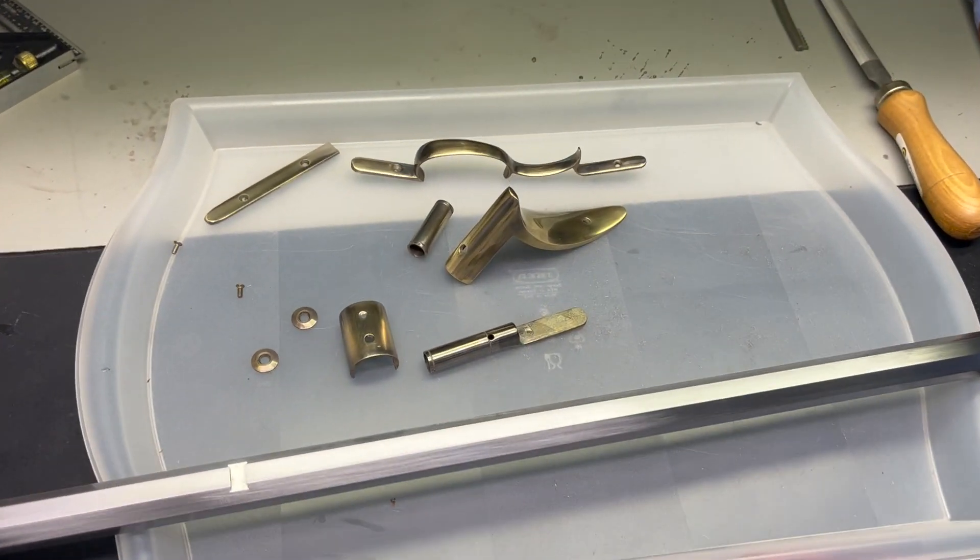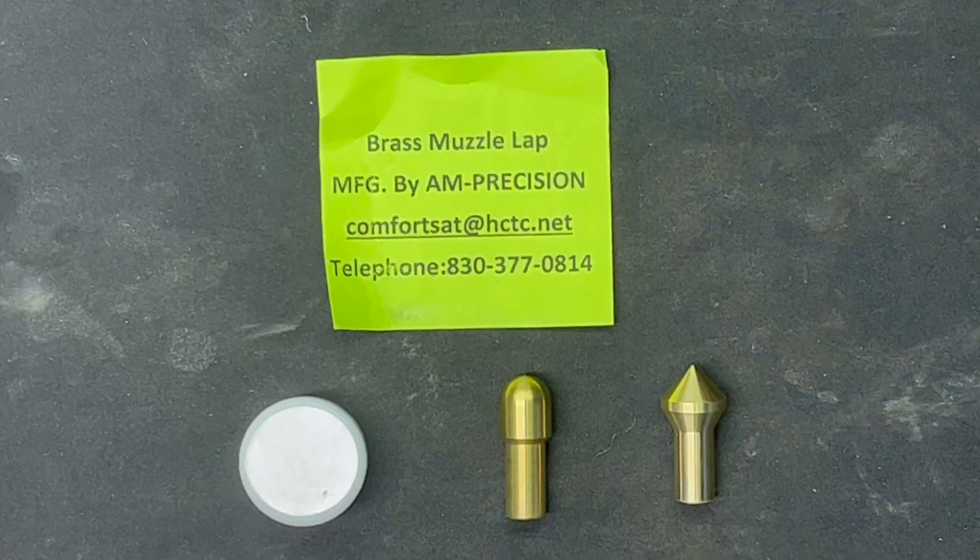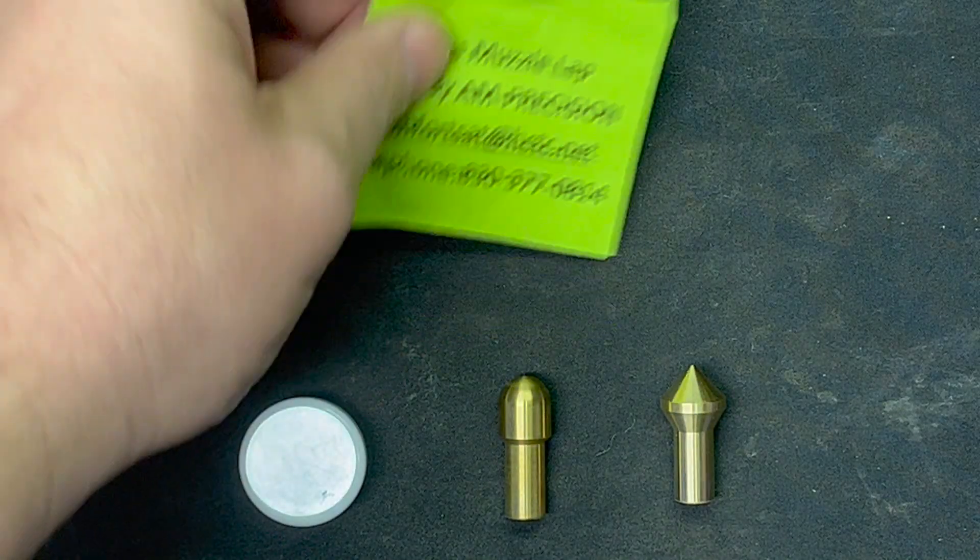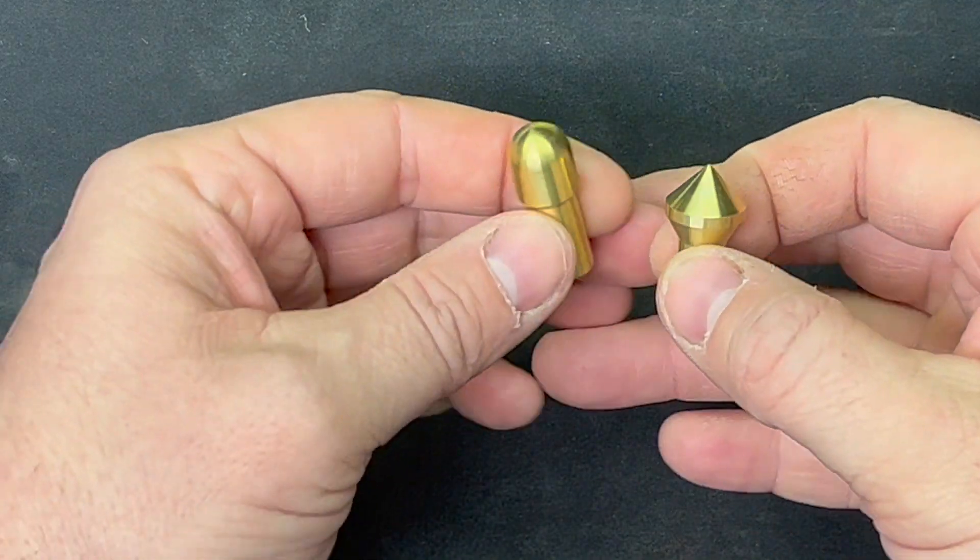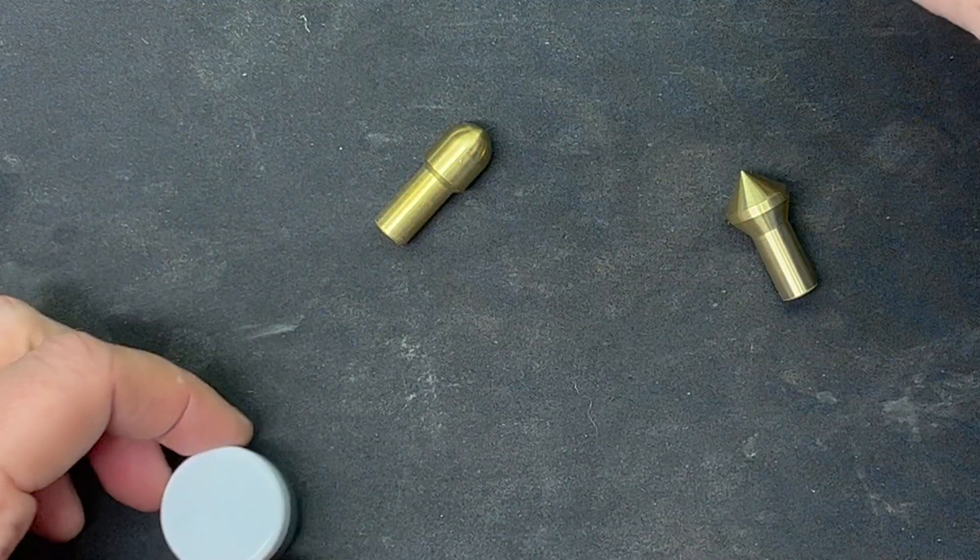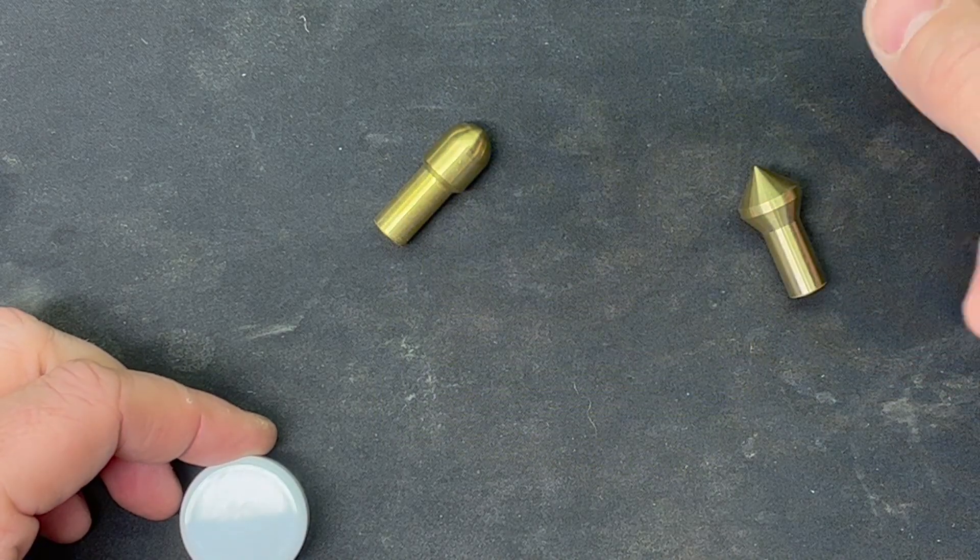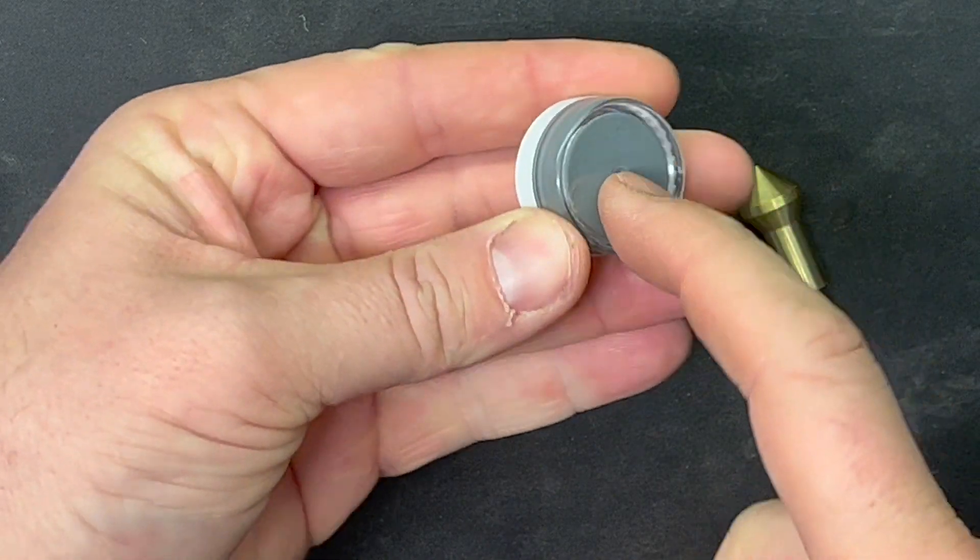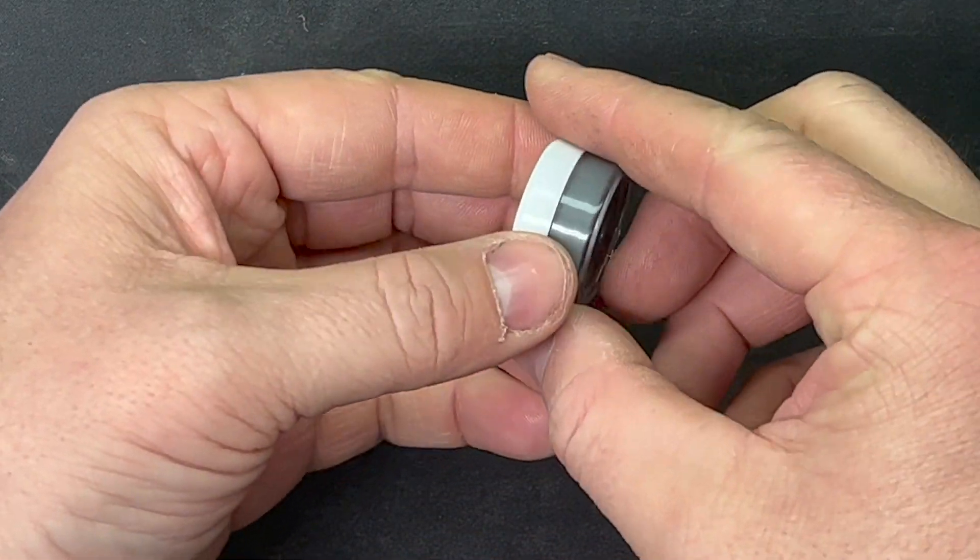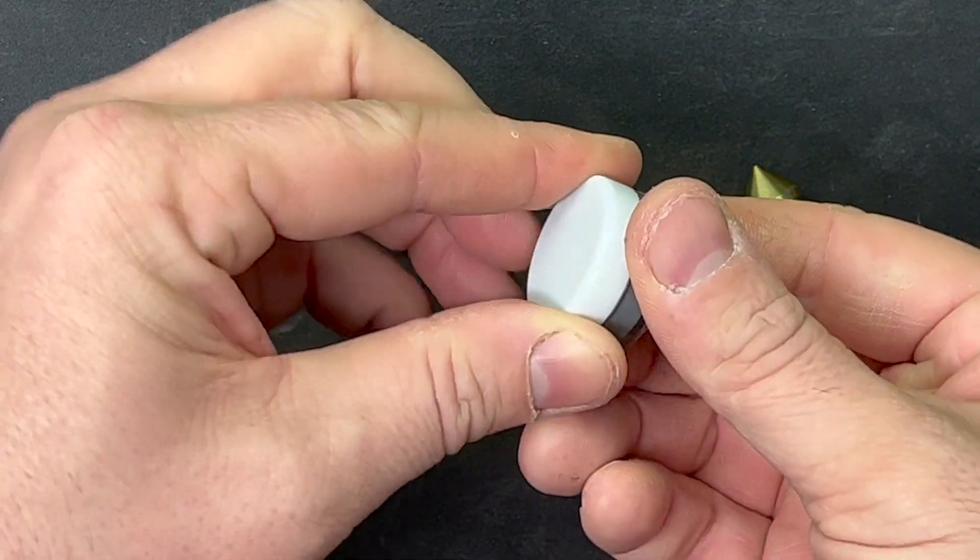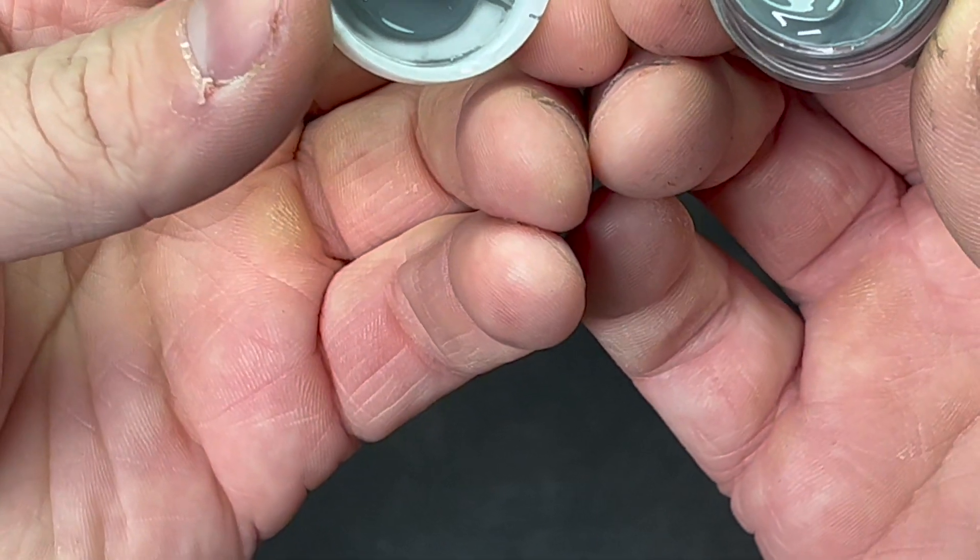Fast forward to new cool tool day. I got my brass laps, they came in. Got them from this guy off eBay. It was only like 25 bucks, came with this little thing of extra fine lapping compound.